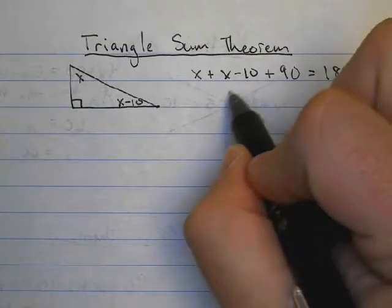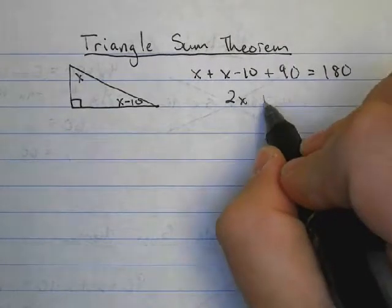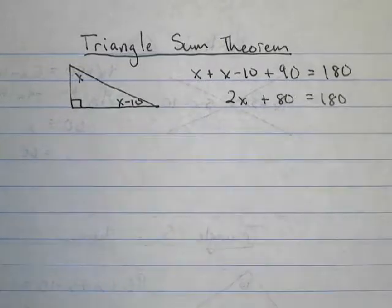So first I'll combine my like terms. x plus x is 2x, minus 10 plus 90 would be a plus 80, that's still equal to 180.